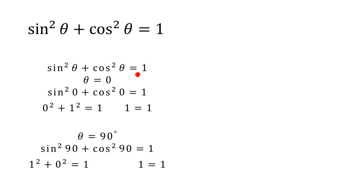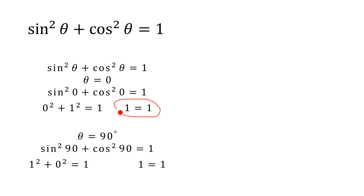The first method is simple and straightforward — we just substitute the value theta equals 0. This gives us sine squared 0 plus cos squared 0 equals 1. We know sine 0 is equal to 0 and cos 0 is equal to 1, so taking the square of 1 gives us 1 equals 1. So we have proved the identity for theta equals 0.